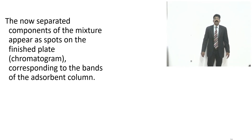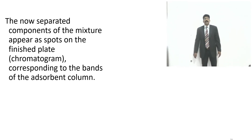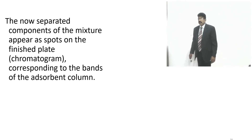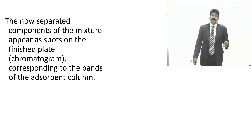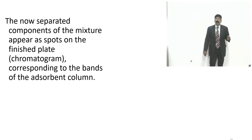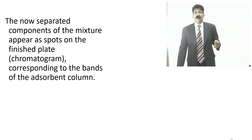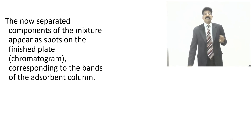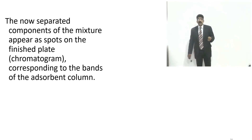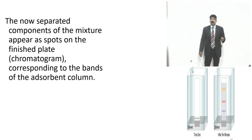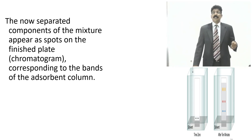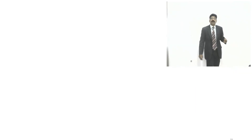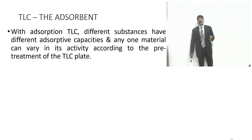After drying, the now-separated compounds appear as spots on the finished plate — that is the chromatogram. This gives the quality and purity of the compound by comparing with a standard compound on the same TLC plate. As shown, the TLC plate illustrates separation of blue, red, and orange colored spots which can be clearly identified.